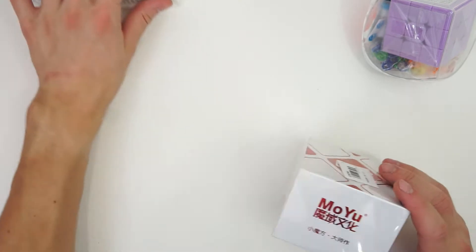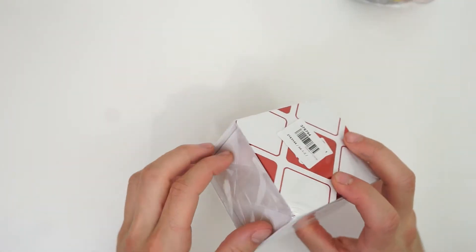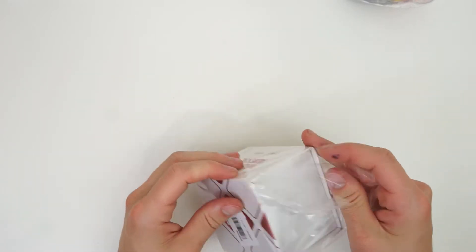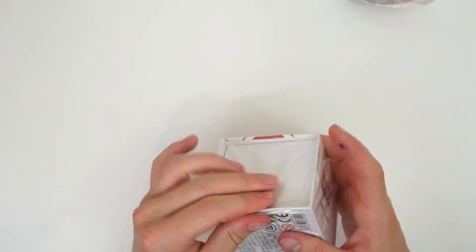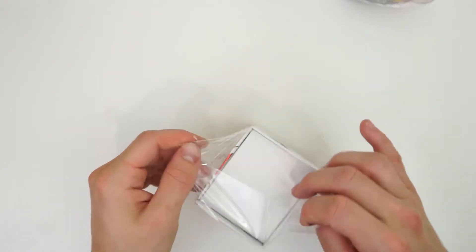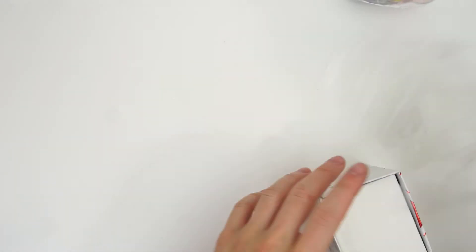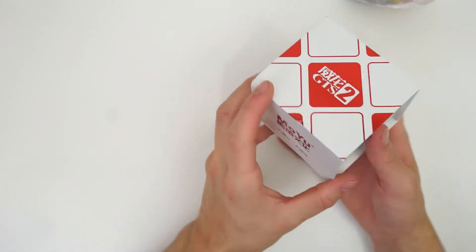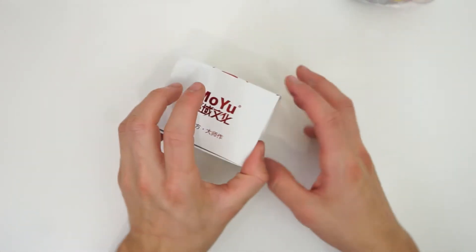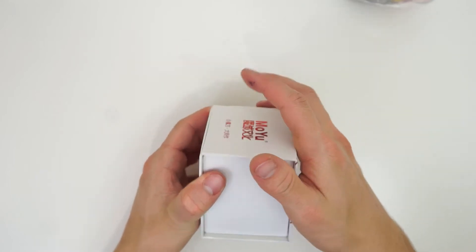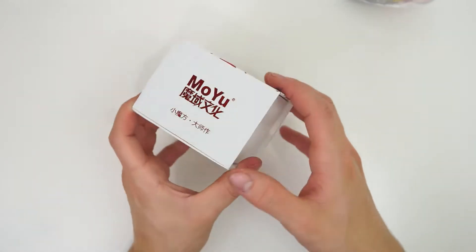So let's go to the GTS 2 first. Oh, this is such a nice box. It's magnetic. Look at this. That's awesome.